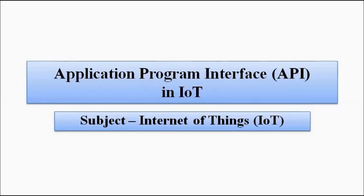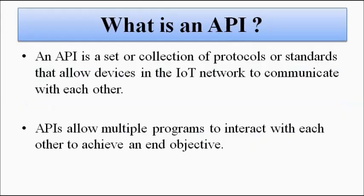The first question: what is this API or Application Program Interface? The technical definition is that it is a set or collection of internet protocols or standards that govern the communication and data exchange between the various devices and appliances which are connected or part of the IoT network.